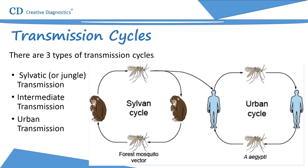The second type is intermediate transmission. In this type, semi-domestic mosquitoes — those that breed both in the wild and around households — infect both monkeys and people. Increased contact between people and infected mosquitoes leads to increased transmission, and many separate villages in an area can develop outbreaks simultaneously. This is the most common type of outbreak in Africa. The last type, urban transmission, involves large epidemics when infected people introduce the virus into heavily populated areas with high mosquito density.